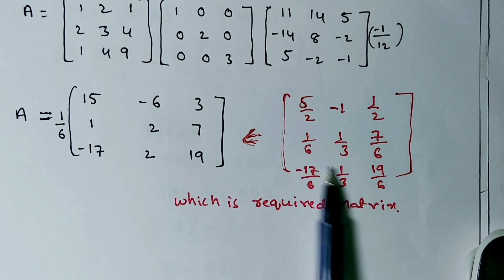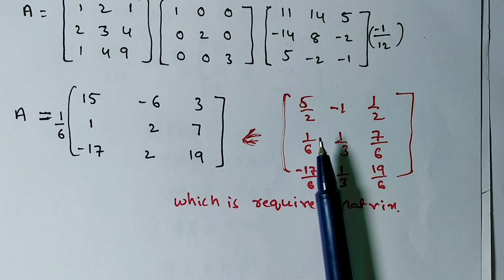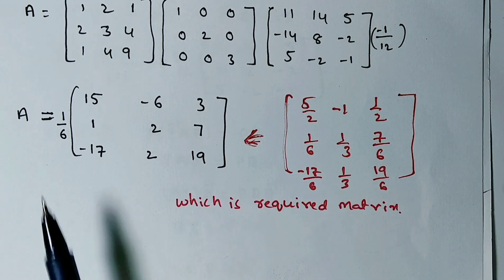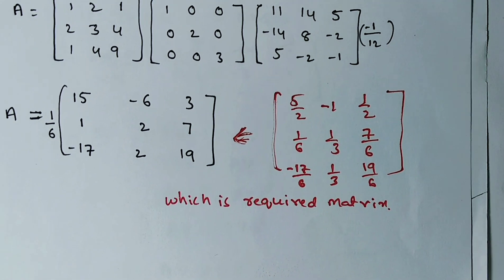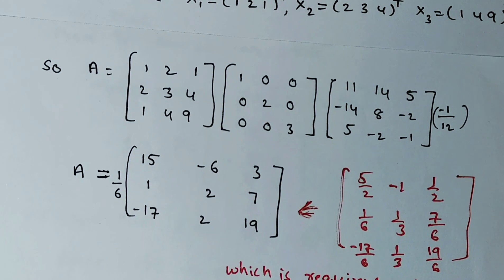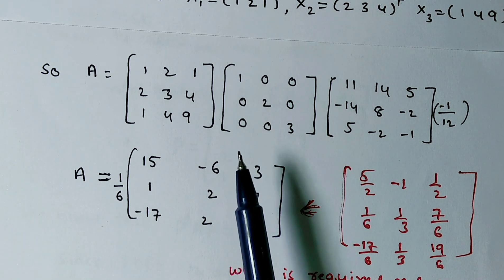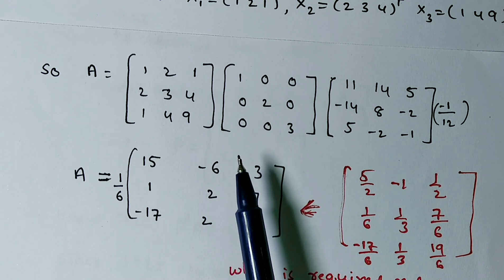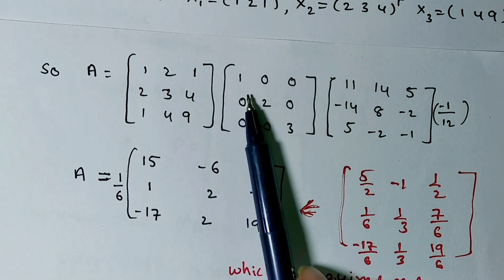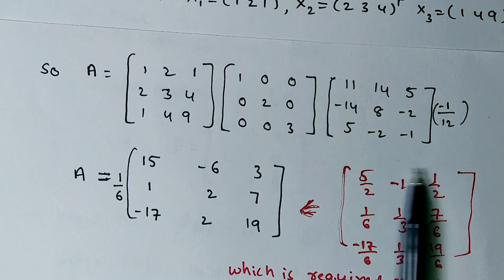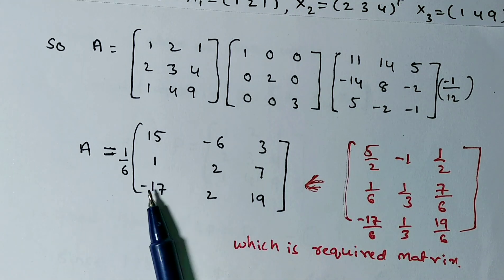The result comes out in fraction form. Taking 6 as a common factor simplifies it. Note that the determinant of A equals the product of eigenvalues: 1 × 2 × 3 = 6. Multiplying through by 6 gives the required matrix A directly.